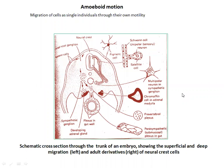Another important movement is amoeboid motion — migration of individual cells through their own motility. Neural crest cells provide a schematic example. These cells migrate and give rise to pigment cells, Schwann cells, multiple neurons, chromaffin cells, adrenal medulla, and vertebral plexuses. Neural crest cell migration is an example of amoeboid motion.